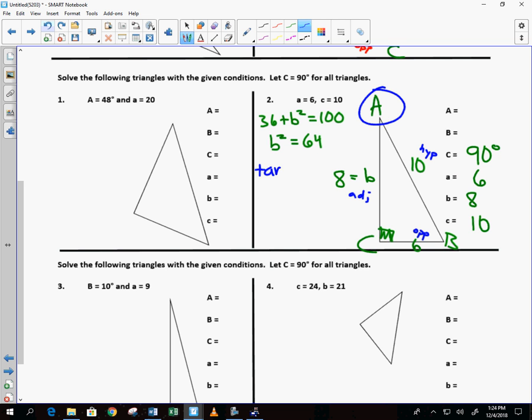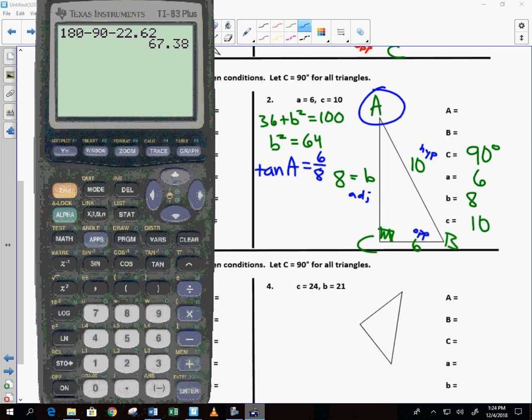We set it up. Tangent of what's the angle? It's a letter of the alphabet. A is equal to, is it opposite over adjacent, or is it adjacent over opposite? Which one is it? Opposite over adjacent. So 6 over 8. Hey, I'm trying to find the angle. So what do I press on my calculator instead? Yep. Tangent inverse of 6 over 8. And we come up with 36.87. That would be angle A, 36.87 degrees.